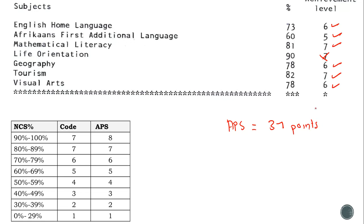VETS, UWC, CPUT, and UCT do not use this method, and those four universities will be covered in a separate video. But for most universities, this is how you calculate your APS score. Thank you.